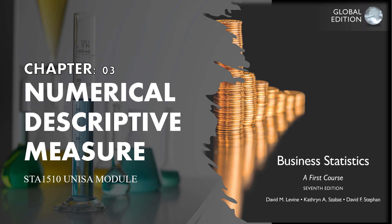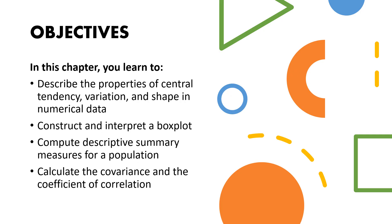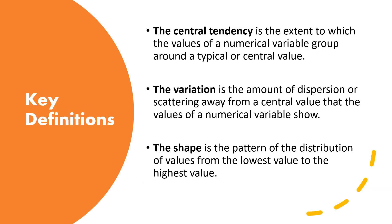In this chapter we will learn about describing the properties of central tendency, variation, and shape in numerical data. We will know how to construct and interpret a box plot diagram, then we will discuss computing descriptive summary measures for a population. In the last video we discussed descriptive summary measures for the sample. Lastly, we'll look at how to calculate the covariance and coefficient of correlation.